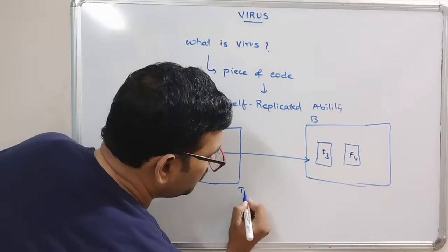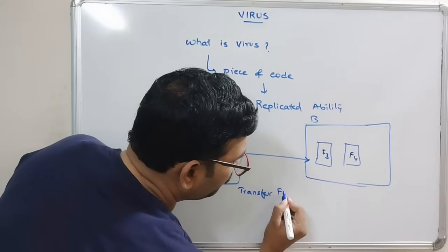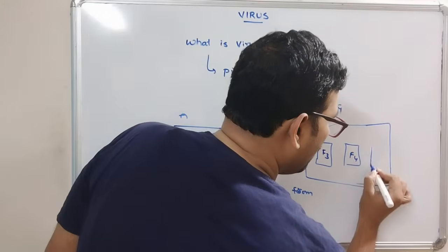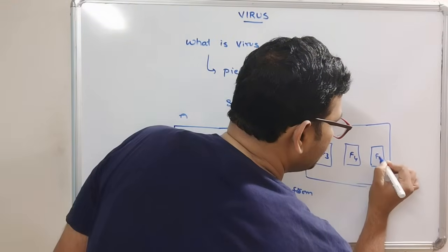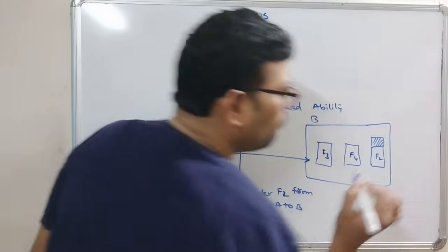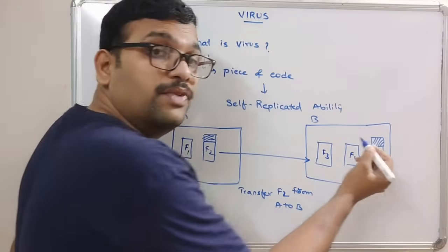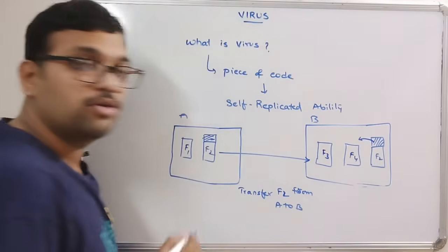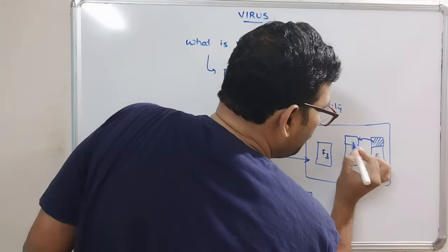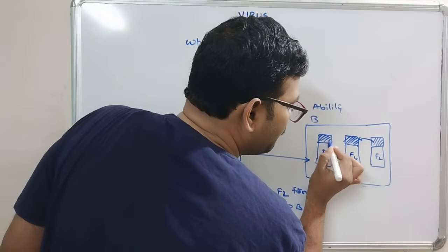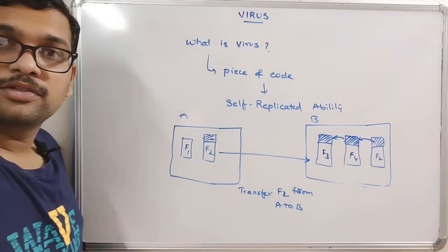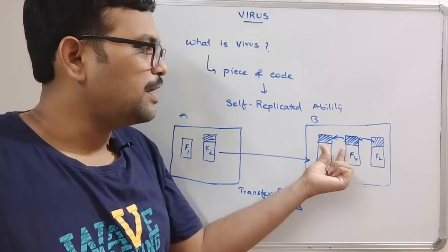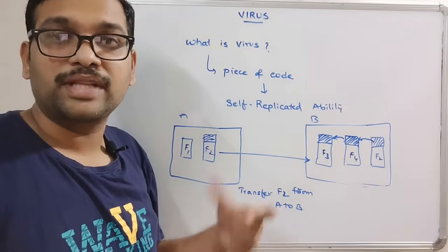If you transfer file one and file two from System A to System B, automatically the virus-infected file F2 will be moved there and replicated — it will create the same set of code and implement it to all the remaining files in the system. Without human intervention, this piece of code can replicate itself to other files. That's called a virus.